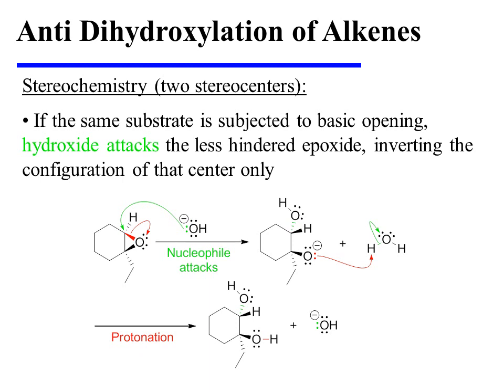If that same substrate is subjected to basic opening instead of acidic opening, the stereochemical outcome will differ. In this instance, hydroxide, being a strong nucleophile, attacks the less highly substituted epoxide carbon, because it is that center which is less sterically hindered. This breaks open the red carbon-oxygen bond, affording an alkoxide that removes a proton from water to generate the vicinal diol reaction product. Notice, though, that this time it was a different stereocenter of the reactant that was inverted by the nucleophile's attack, and therefore this vicinal diol is the enantiomer of the anti-vicinal diol produced in the last example. Both reactions gave anti-stereochemistry, but they afforded the opposite enantiomers.